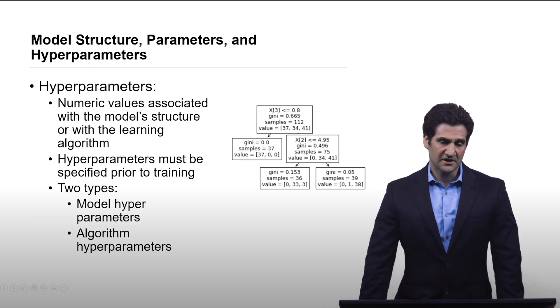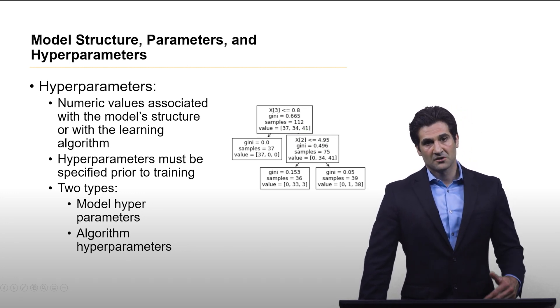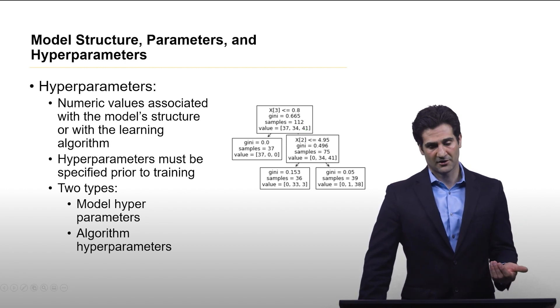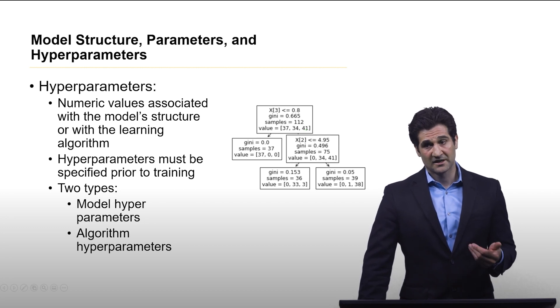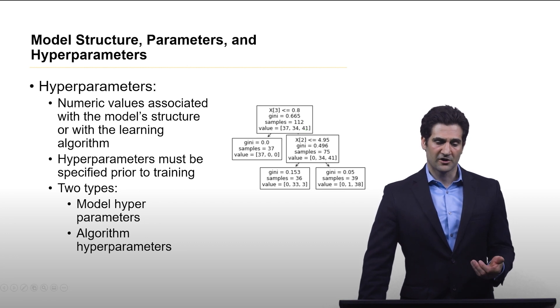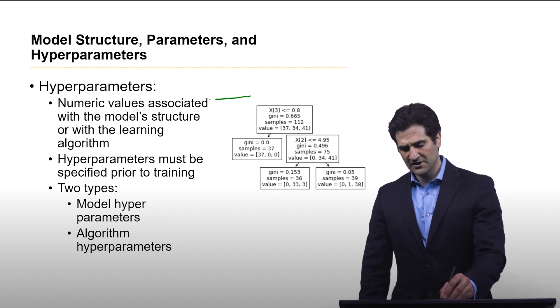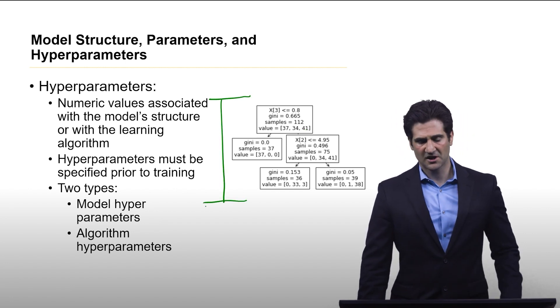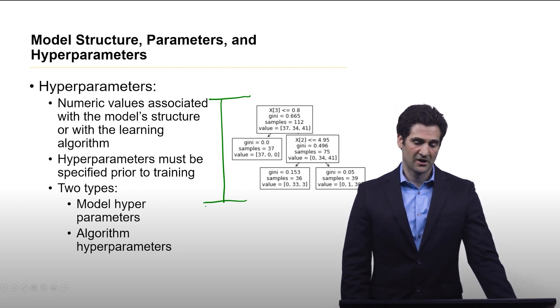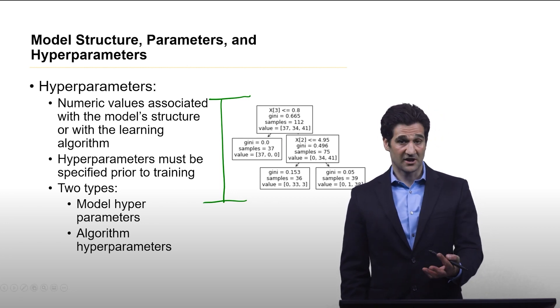You don't really have to worry about those parameters yourself as a designer. You just need to be aware that that is what's going to be filled in during the training process. The next thing is called hyperparameters, which sounds quite exciting. These are numeric values associated with the model structure or the learning algorithm. They differ from parameters in that these are things that now you can tune. For example, in this decision tree model, the height of the decision tree is a common hyperparameter. You can specify decision trees that have a much shorter height, maybe only a height of 2. In this case, we set it as 3.